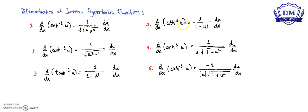The derivative of the inverse hyperbolic cotangent of u is equal to 1 all over 1 minus u squared, times the derivative of u with respect to x. The derivative of the inverse hyperbolic secant of u is equal to negative 1 all over u times the square root of 1 minus u squared, times the derivative of u with respect to x.